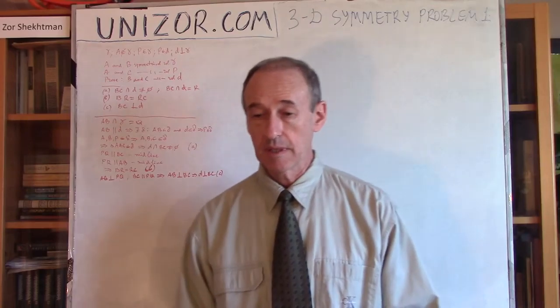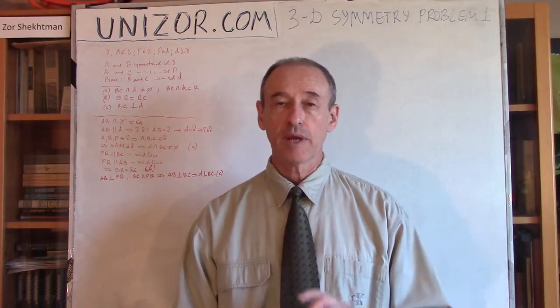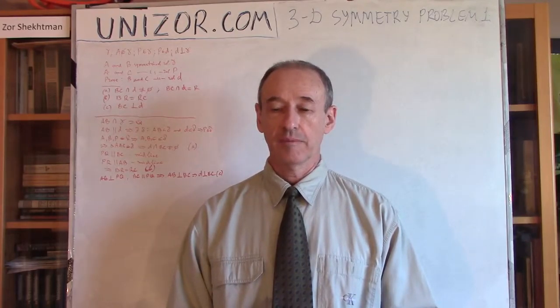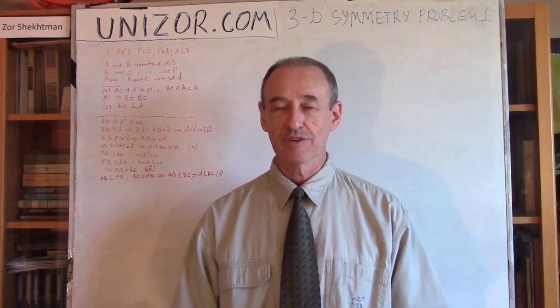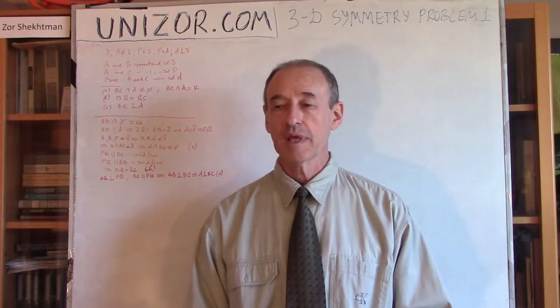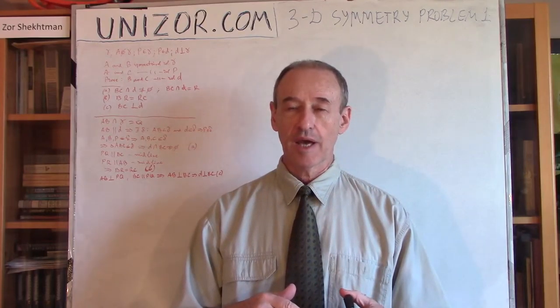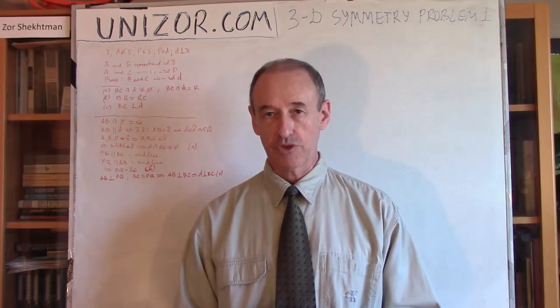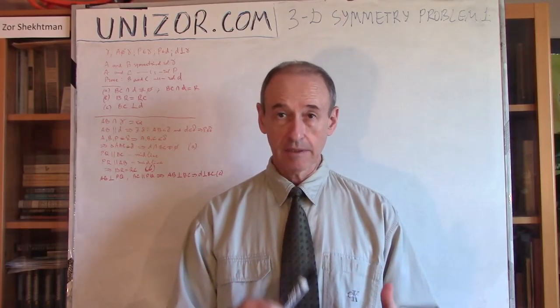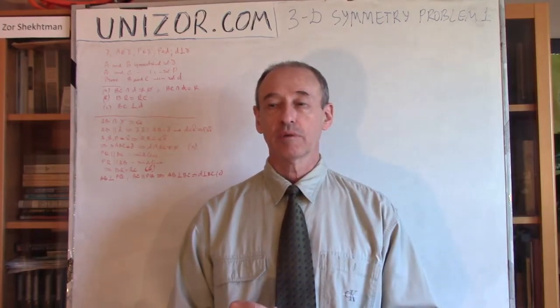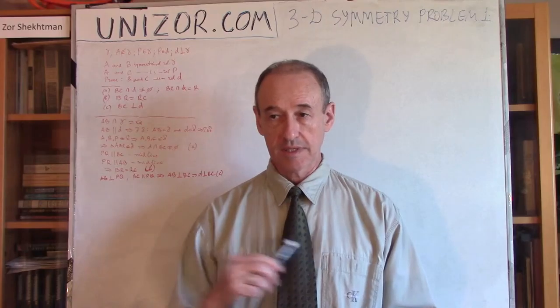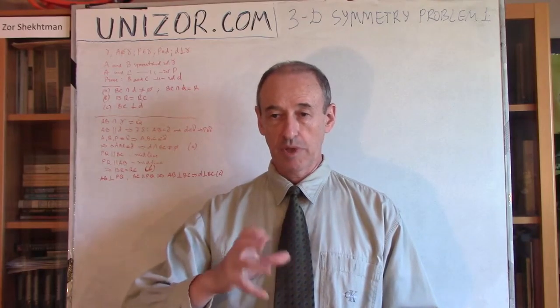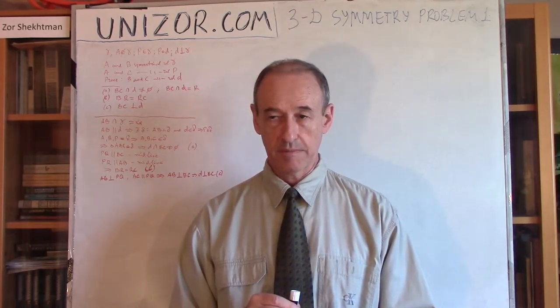This lecture is kind of a final theoretical lecture about symmetry in 3D space. I will most likely touch this issue again in some problems, but this lecture is also a problem which encompasses all three types of symmetry in 3D space: symmetry relative to the plane, like a reflection; symmetry relative to a point, central symmetry; and symmetry relative to an axis, which can be arranged as a rotation of space.